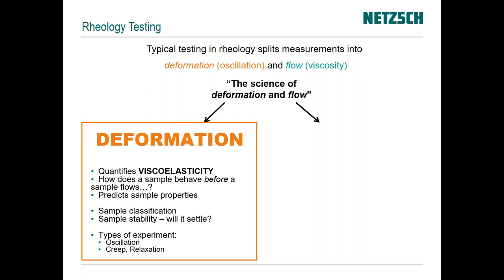Through oscillation we're able to look at the sample and understand its structure more clearly. We get mechanical properties out of the material and we start classifying them — we can look at whether a material settles over time, how the material flows, how it will pump. Typical experiments in this mode would be oscillation or static creep, where we put a stagnant load on the material and watch how it changes, or apply a load and watch how the material relaxes over time.